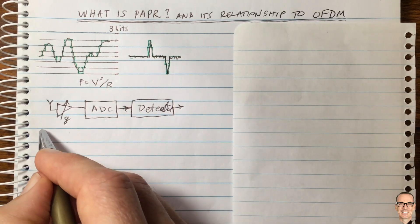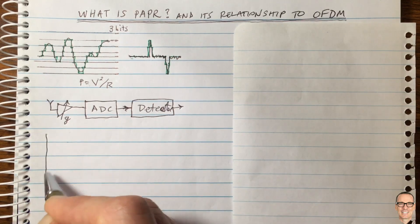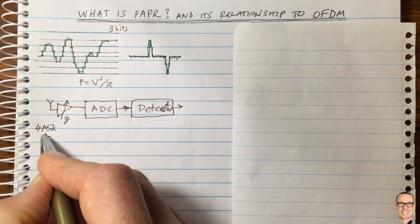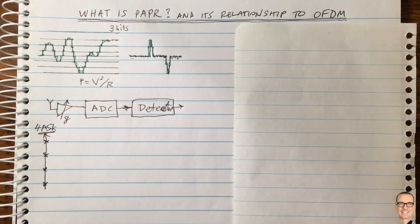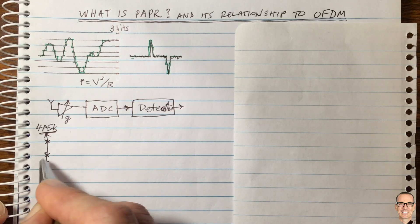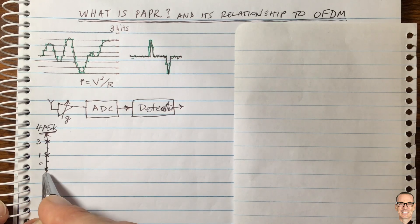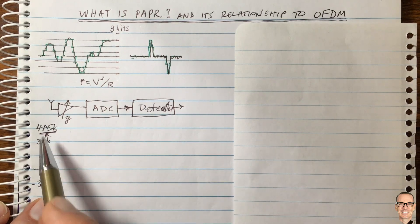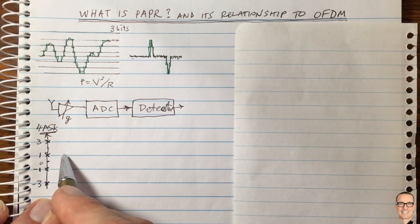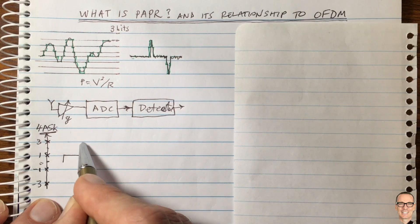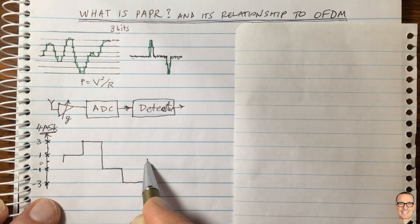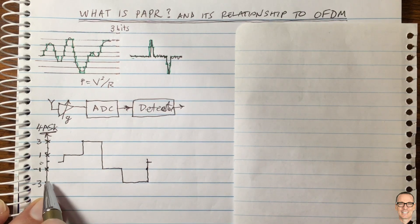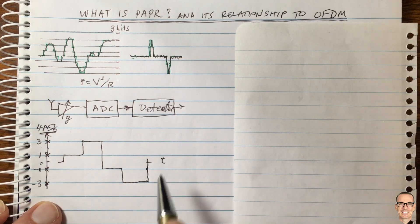Let's consider four-level amplitude shift keying (4-ASK), with four levels: minus three, minus one, one, and three. We're going to send a signal which can only take one of these four values. Each of these four levels can represent two bits — for example, 00, 01, 10, 11. Let's say we send a signal going from level one up to level three, followed by minus one, followed by minus three. This is our waveform in time.